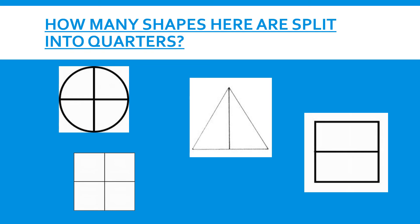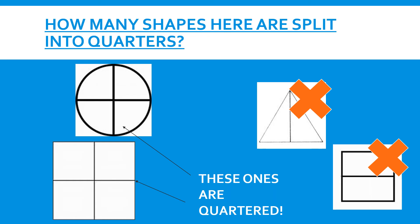Now look at the shapes below once again. Can you see which shapes are split into quarters? The circle is split into quarters, and the rectangle below the circle is also split into quarters. Did you get it correct?